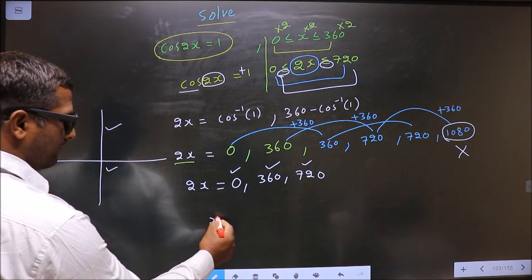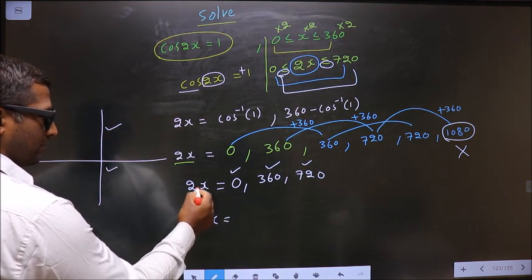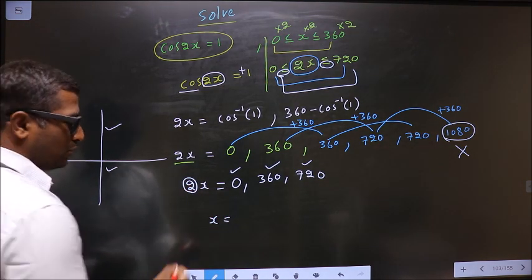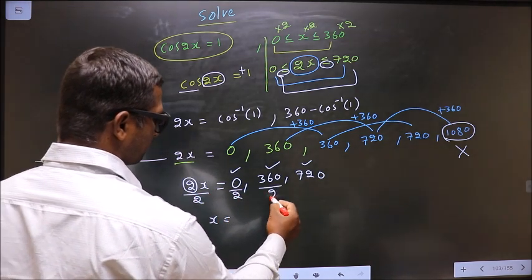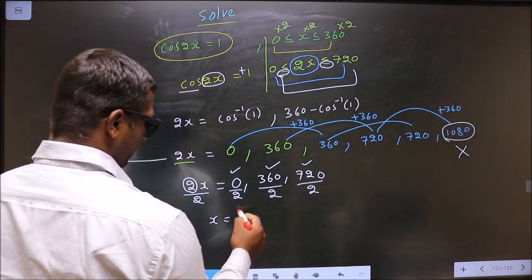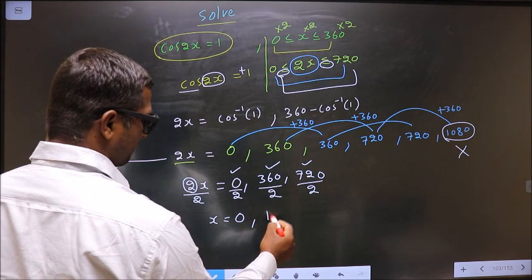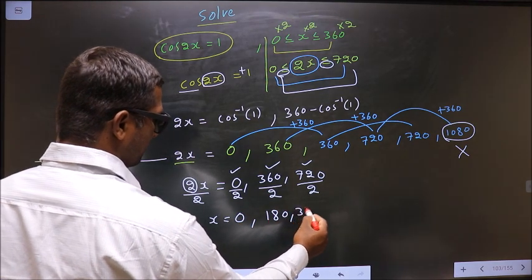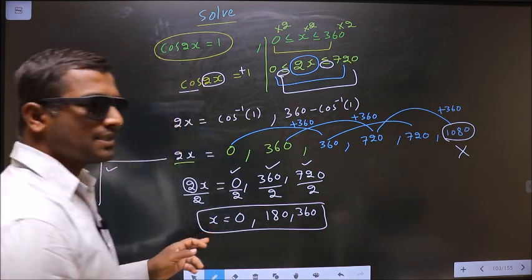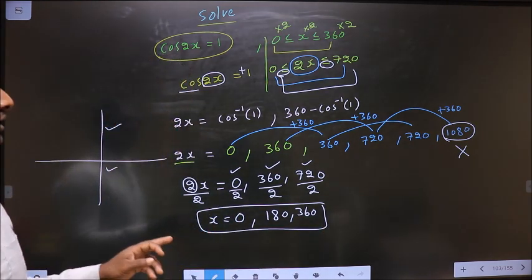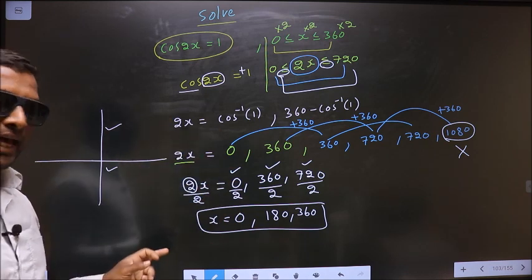Now to get the values for x we should remove this 2, so to remove the 2 you divide by 2. So we get 0 here, 180 we get here, 360 we get. This is our answer. Am I clear?